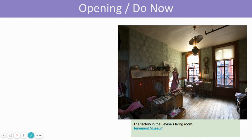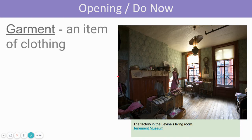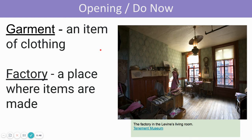I want to quickly introduce two important vocabulary words in preparation for today's do-now activity. The word 'garment' — the Levine family produced garments and worked in the garment district in New York City, in a garment factory. A garment is an item of clothing; they made clothes. A 'factory' is a place where items are made. Any place where items are being produced and made to be sold is a factory — a place where things are made.